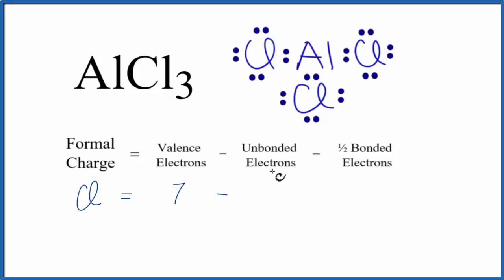We'll subtract from that the unbonded valence electrons. These are the electrons that aren't involved in chemical bonds. So we have 2, 4, 6 of these.